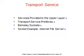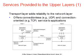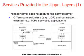The transport service includes services provided to the upper layers. The ultimate goal of the transport layer is to provide efficient, reliable, and cost-effective data transmission service to its users, normally processes in the application layer. To achieve this, the transport layer makes use of services provided by the network layer. The software or hardware within the transport layer that does the work is called the transport entity. It can be located in the OS kernel, in a library package bound into network applications, in a separate user process, or on the network interface card — the first two being most common on the internet.